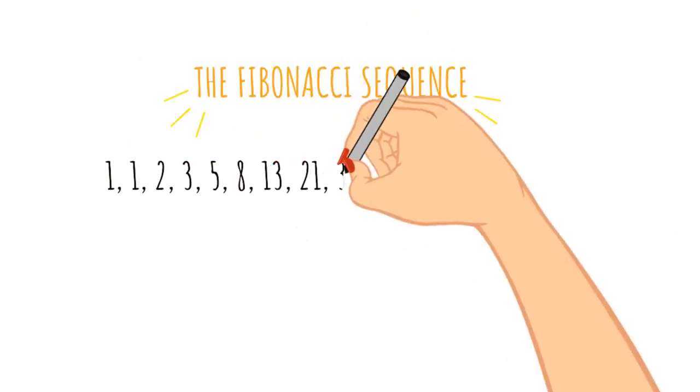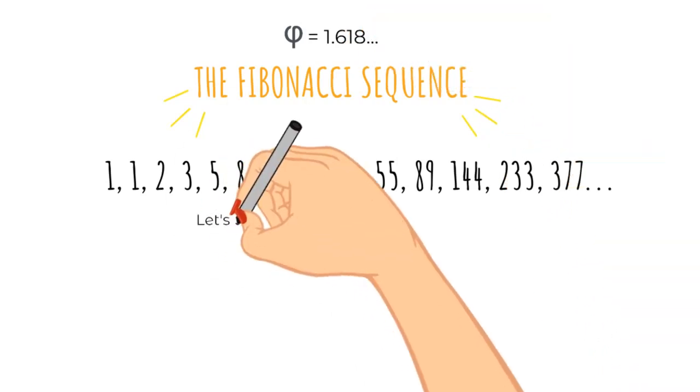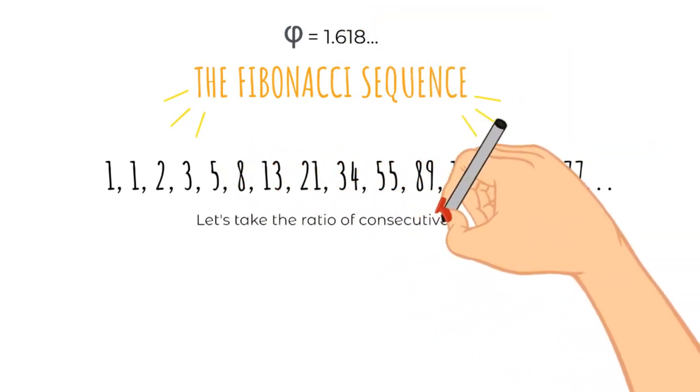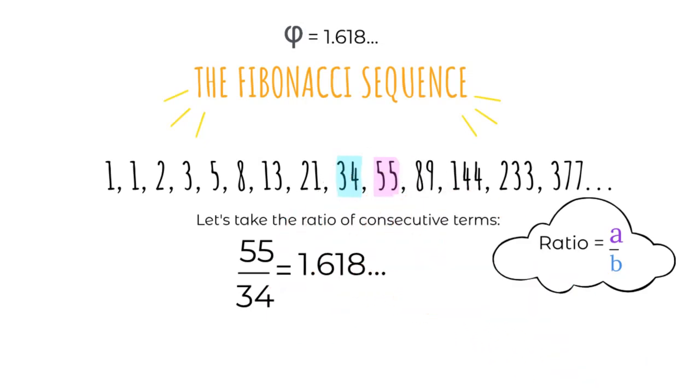So here's our Fibonacci sequence. Let's remind ourselves of the golden ratio. It's 1.618. And now let's take the ratio of consecutive terms. And another quick reminder, to find the ratio, we do A divided by B. So as 55 is our A and 34 is our B, oh look, I get the golden ratio.